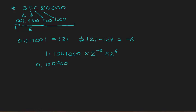After shifting the decimal point 6 places to the left, we have 5 zeros after the decimal, then the mantissa digits: 0.000001100100... This gives us 2 to the power of 0, and now we can directly read off the binary value as a decimal fraction.